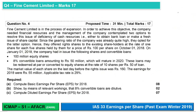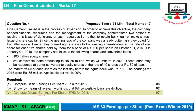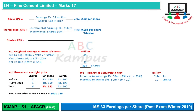Now we move to the next part: calculating diluted EPS for 7 marks. Since we have already solved the first two parts, no extra calculations are needed. For diluted EPS, earnings = 55 million + 2.84 million (basic + incremental). Shares = 110 million + 10 million (basic + incremental). This gives diluted EPS of Rs. 0.482 per share. In summary: 8 marks for basic EPS, 2 marks for proving incremental/dilutive, and 7 marks for diluted EPS — making the full 17-mark question solved. That's all for today. Have a good day.